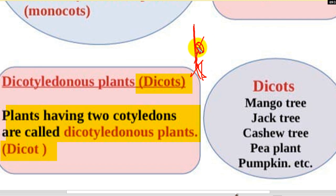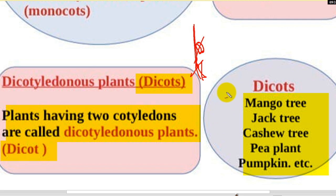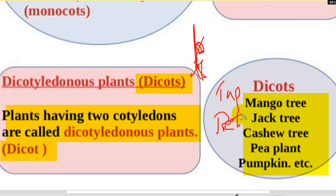There are examples of mango tree, jack tree, cashew tree, peep plant, pumpkin, etc. That is the taproot system with reticulate venation. That is dicot.